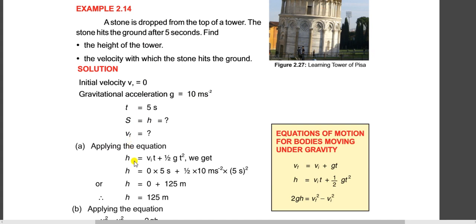We use the second equation of motion: h = vi·t + ½g·t². Substituting vi = 0, t = 5, and g = 10: h = 0 × 5 + ½ × 10 × 5². The first term is zero, so h = ½ × 10 × 25 = 125 meters. The height of the tower is 125 meters.